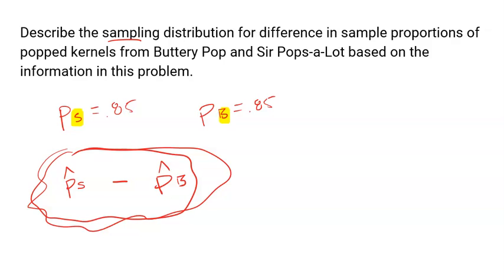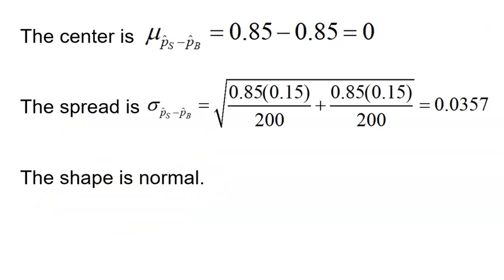So three sentences is all you really need. The center is the mean of all possible differences between a sample from Sir Pops-a-Lot and a sample from Buttery Pops, and if they're both 85%, that's a difference of zero. The spread is the standard deviation of all possible differences, and pretty easy formula, a little bit complicated, but not too bad. And because they're both exactly the same, same sample size and same proportion makes it really easy, but I get 0.0357, and the shape is, of course, going to be normal.